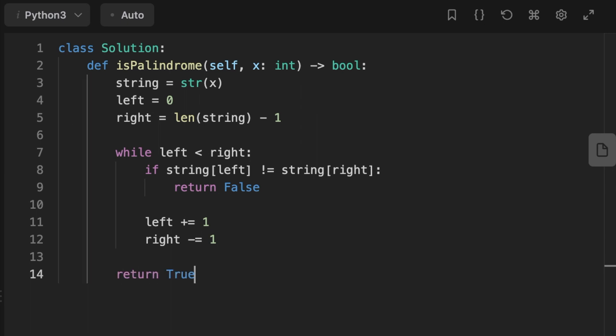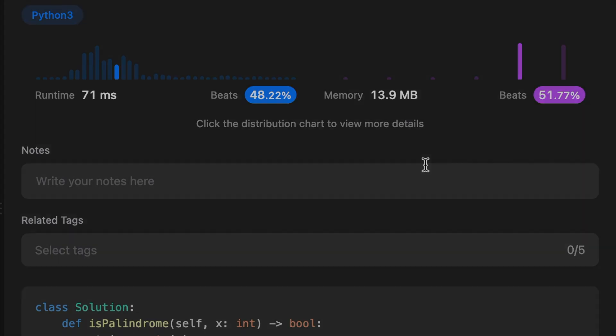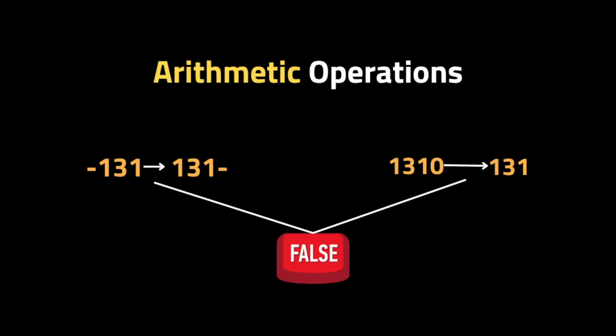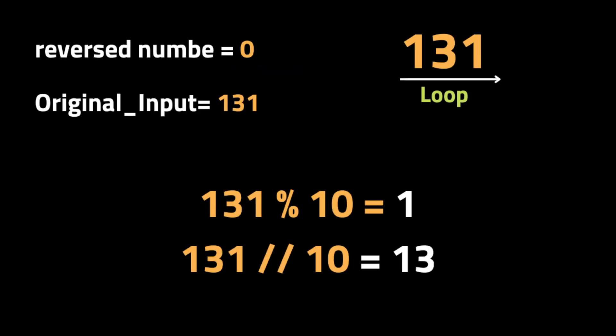The second way to solve this problem is by using arithmetic operations to reverse the digits of the input integer. Let's say we have this input integer. The first condition is that we need to check if the integer is negative, or if the last digit is zero - those are the two cases when it's impossible to have a palindrome number. Then we initialize a variable to hold the reversed number, and we loop through the input integer. At each iteration we extract the last digit using the modulo operator and add it to the reversed number variable.